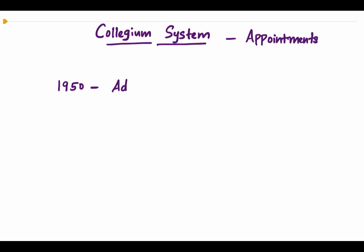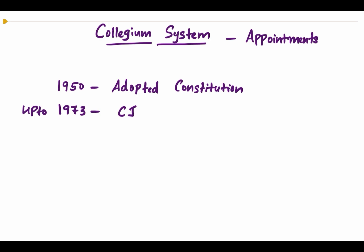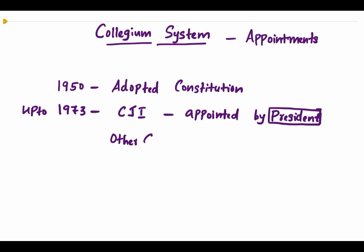Since the collegium system was evolved through various judgments of the Supreme Court, we need to understand what prevailed in India for judicial appointments before it. The Constitution of India was adopted in 1950. From 1950 up to 1973, the Chief Justice of India was appointed by the President, and all other judges of the Supreme Court were appointed by the President with the recommendation of the Chief Justice and other judges, as mentioned in the Constitution.